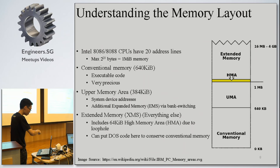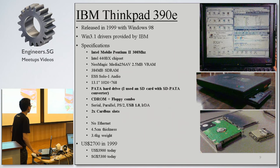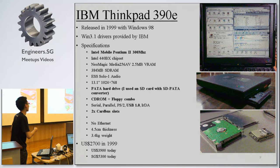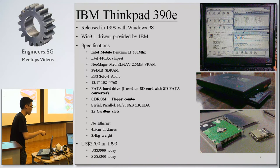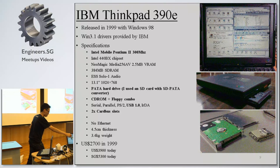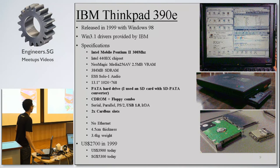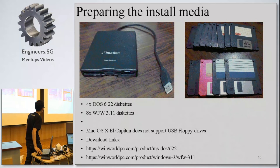The first computer I tried is the IBM ThinkPad 390E, released in 1999, which came with Windows 98. You can see the vintage specifications — it even comes with a floppy drive inside. Nowadays modern computers don't even have optical drives anymore. The price was $2,700 USD, which in today's money is about $5,300 SGD — a very rare price range for a laptop today.